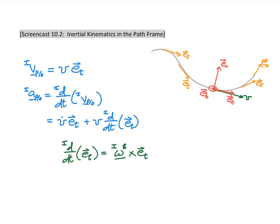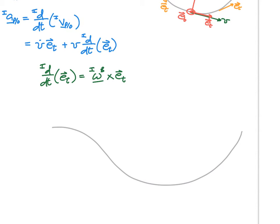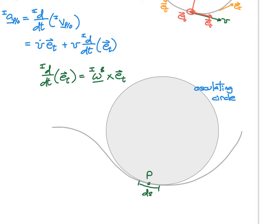To parameterize this into something we know, let's zoom in on a section of the curve and define the geometry. At any location on the curve where particle P exists, we can fit a circle that defines that curve — this is called an osculating circle. Osculating has a Latin origin meaning 'to kiss,' so the circle is just kissing the point P, which is the location of our particle on the path.